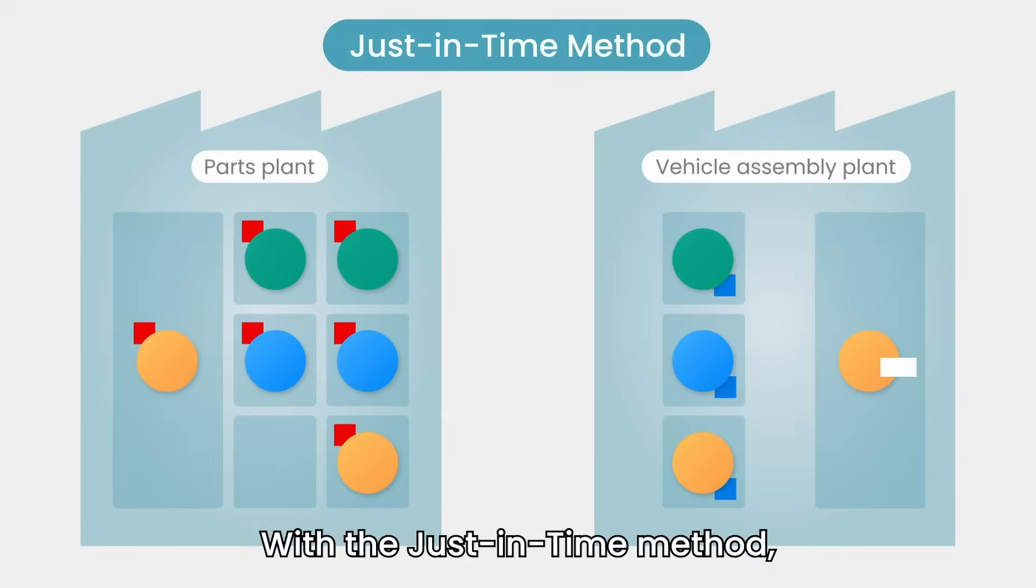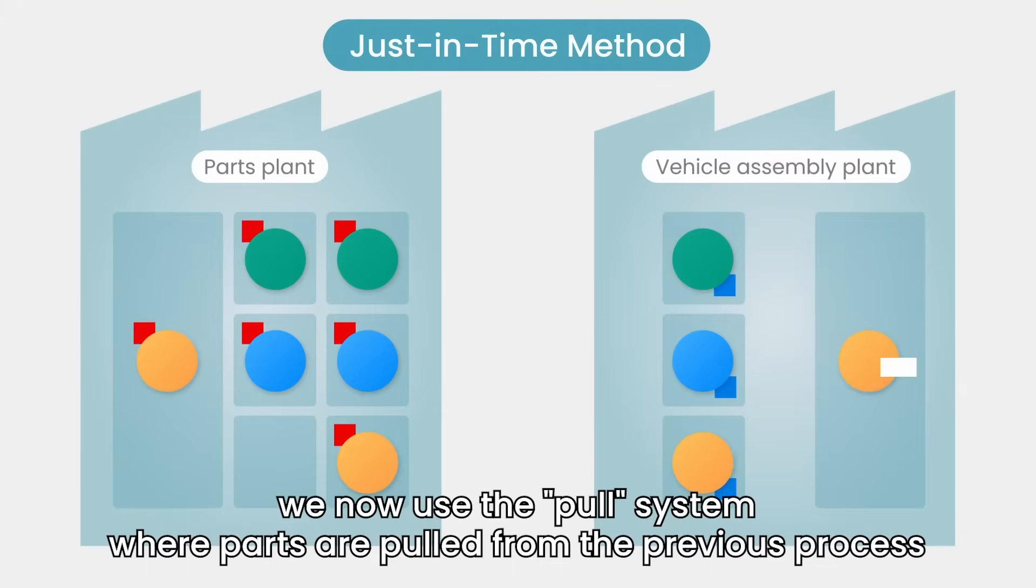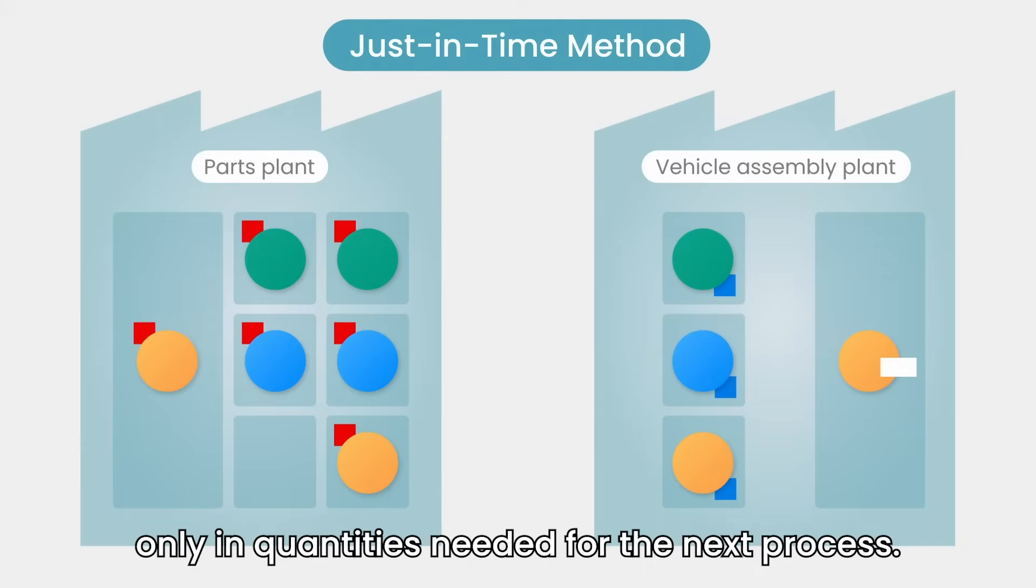With the just-in-time method, we now use the pull system, where parts are pulled from the previous process only in quantities needed for the next process.